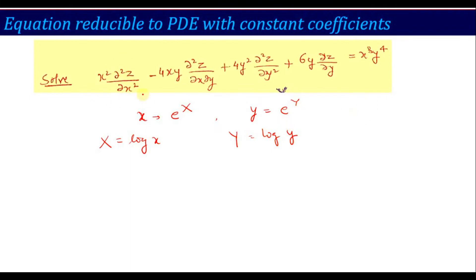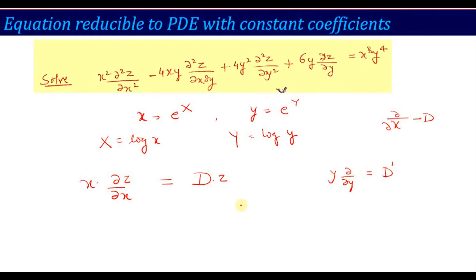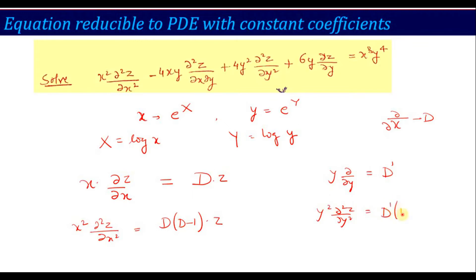This is the way you convert the equation into capital D form. Also, xy·(∂²z/∂x∂y) is replaced by D·D'. As a formula to remember: if you have a variable coefficient equation, replace x·(∂/∂x) with D, x² gives D(D−1), y² gives D'(D'−1), and xy gives D·D'. For the first step of conversion, write: let X = log x, Y = log y.